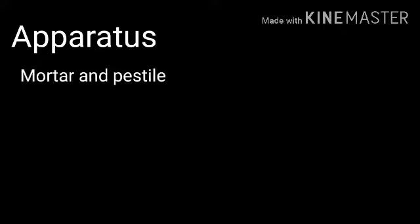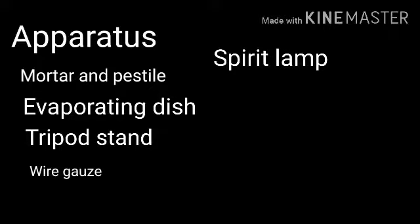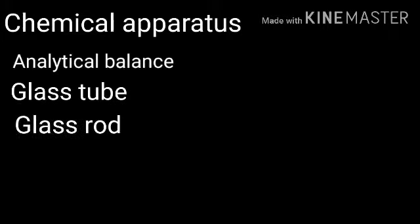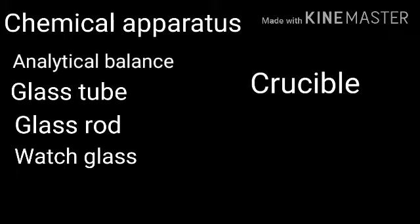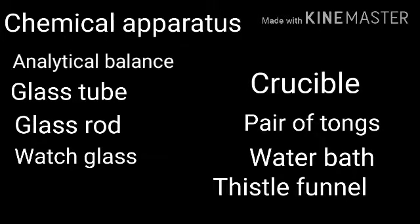Hi children, welcome back to our chemistry class. Last class we discussed some apparatus: mortar and pestle, evaporating dish, tripod stand, wire gauze, spirit lamp, Bunsen burner, reagent bottle, and gas jar. I hope all of you understood that. Next, I'm going to continue with chemical apparatus and their uses. We will cover: analytical balance, glass tube, glass rod, watch glass, crucible, pair of tongs, water bath, and thistle funnel. Let's start.